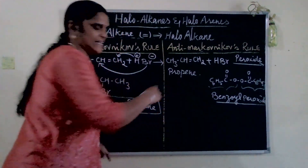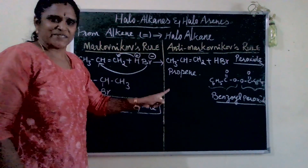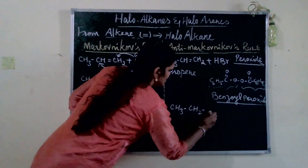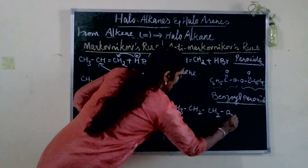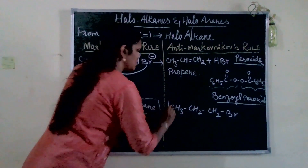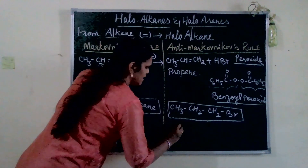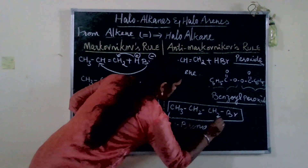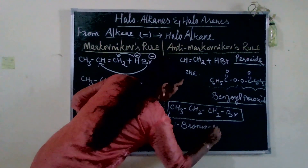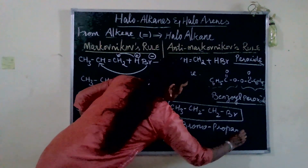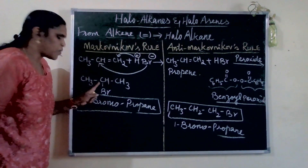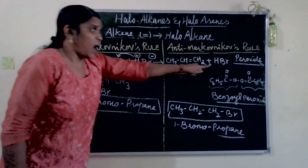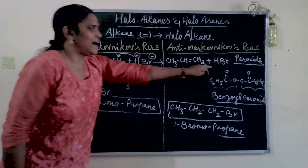The product we get is the opposite — CH3-CH2-CH2Br, which is 1-bromopropane. So 2-bromopropane has bromine on the secondary carbon, whereas 1-bromopropane has bromine on the primary carbon. That is the key difference between the two products.